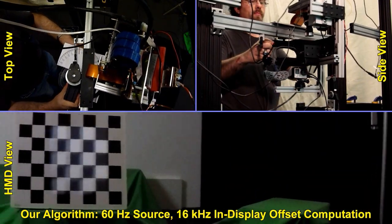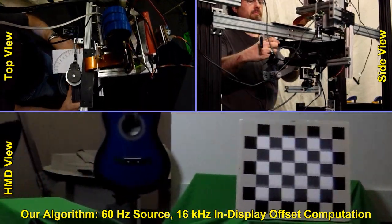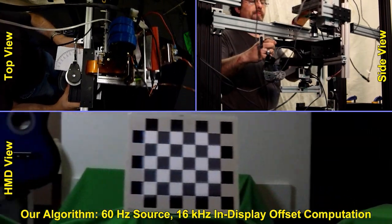Here is the result using our algorithm. Note that the overlay continues to stay aligned to the physical checkerboard even at this higher speed.